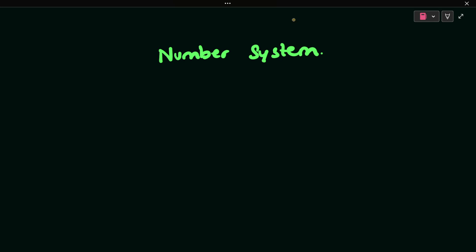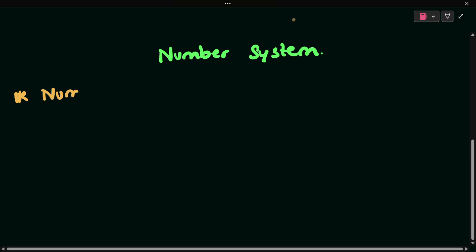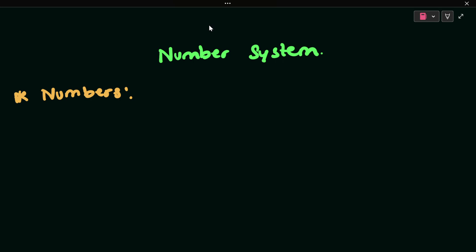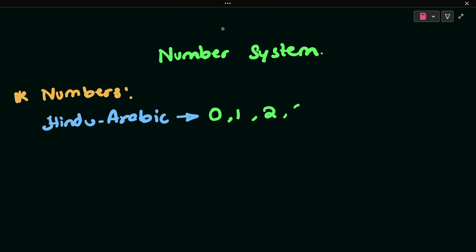So first, what are numbers? The numbers we use are called Hindu-Arabic numbers. So Hindu-Arabic numbers are: one, two, three, four, five, six, seven, eight, nine, ten, eleven, twelve. So we use Hindu-Arabic numbers.